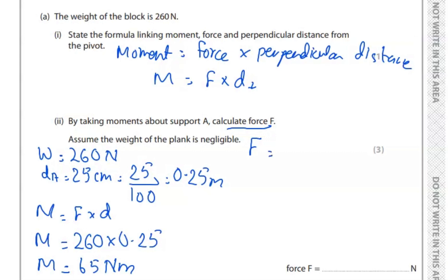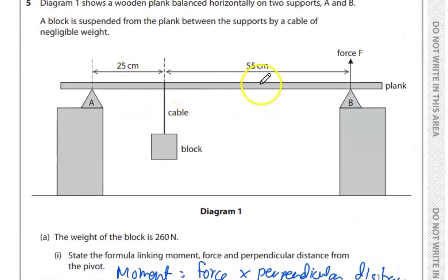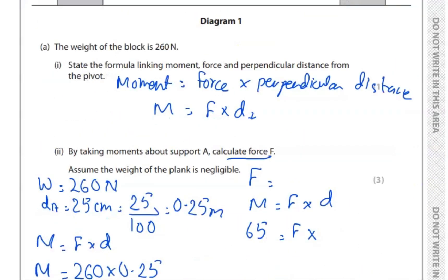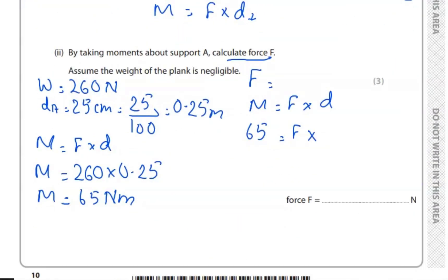Now we can find the force at A. We know the formula: moment equals force times distance. Substituting: moment is 65 newton metres. For the distance, looking at the figure, we have 25 plus 55 which equals 80 centimetres, or 0.8 metres. So the force is 65 divided by 0.8, which gives 81 newtons.